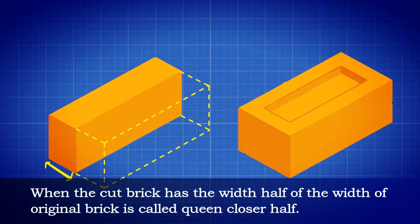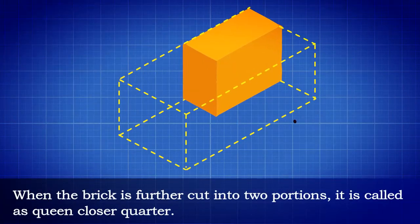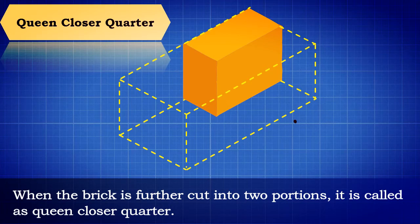When the cut brick has the width half of the width of original brick, it is called Queen Closer half. When the brick is further cut into two portions, it is called as Queen Closer quarter.